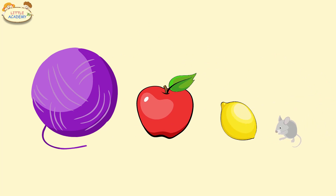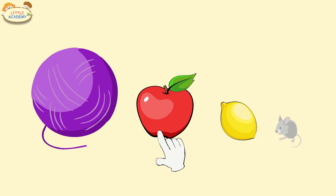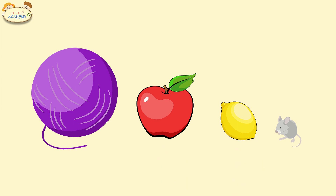Now tell me, what size is the ball of yarn? Good job. The ball of yarn is large. What about the apple? The apple is smaller. What about the lemon? Yes, the lemon is even smaller. And the mouse? The mouse is the smallest.